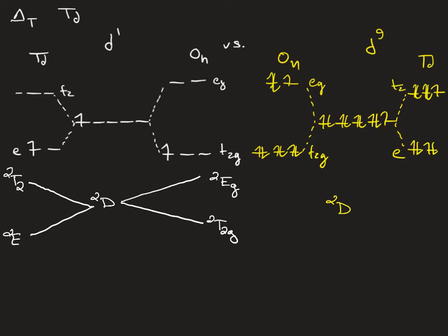For the D9 ion, as you go and split your EG and your T2G states, this doublet D term splits.